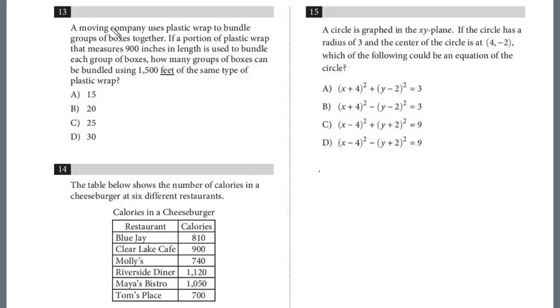Let's take a look at 13. A moving company uses plastic wrap to bundle groups of boxes together. If a portion of plastic wrap that measures 900 inches in length is used to bundle each group of boxes, how many groups of boxes can be bundled using 1,500 feet of the same type of plastic wrap?